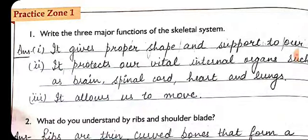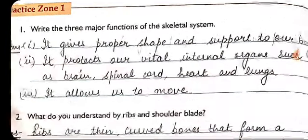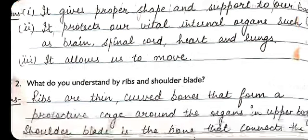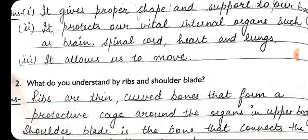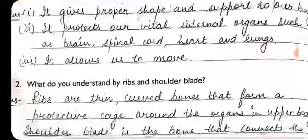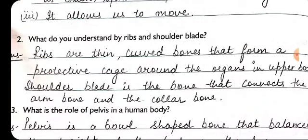The skeletal system helps us in standing, it gives support to our body, and it also protects our internal vital organs such as the brain, lungs, and heart. It also allows us to move our limbs with the help of the skeletal system, which is made of bones.